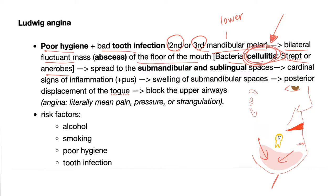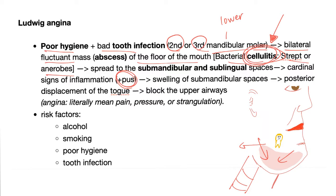This spread leads to the cardinal signs of acute inflammation: redness, hotness, swelling, pain, loss of function, and pus. Then we have swelling of the submandibular space, and posterior displacement of the tongue, which may block the upper airway — which is horrible. Risk factors include alcohol, smoking, poor hygiene, and tooth infection.